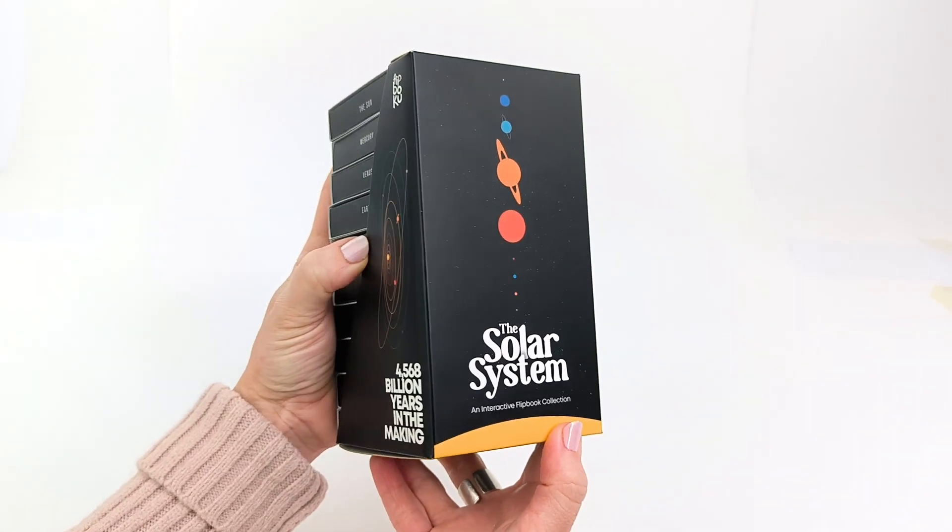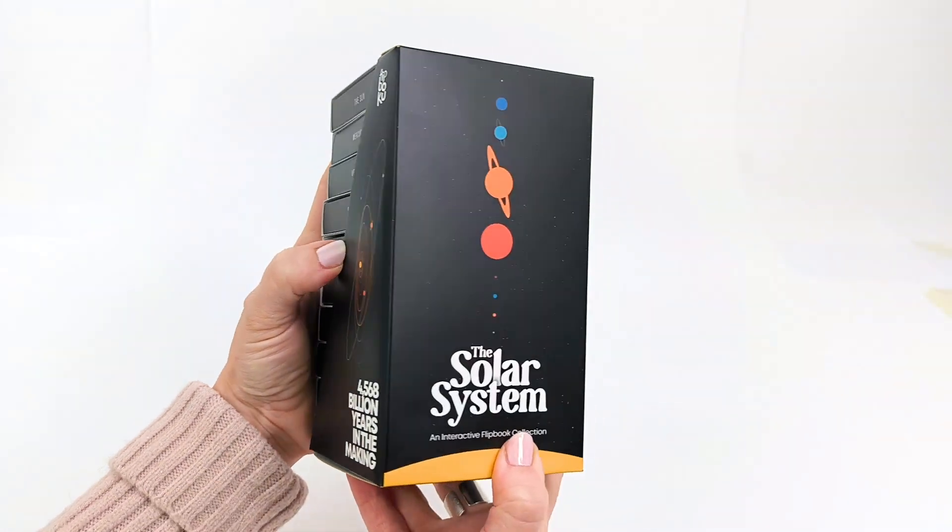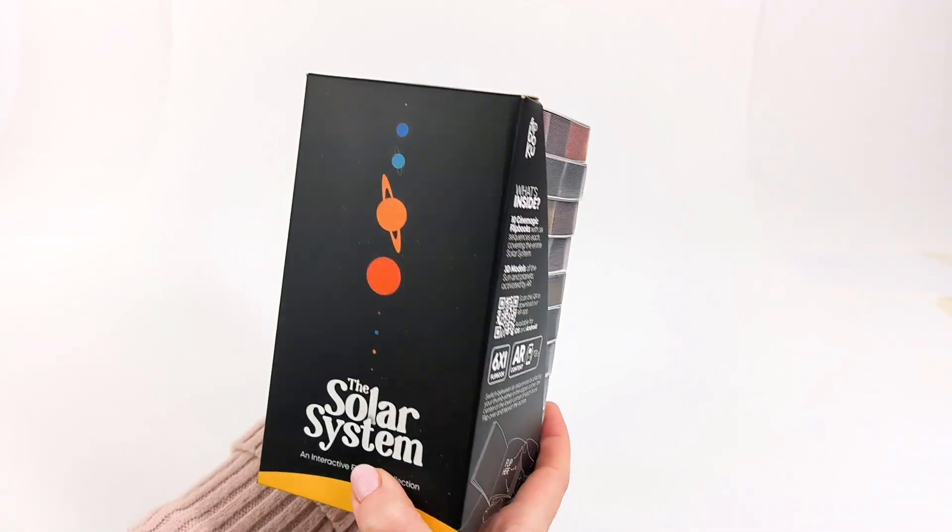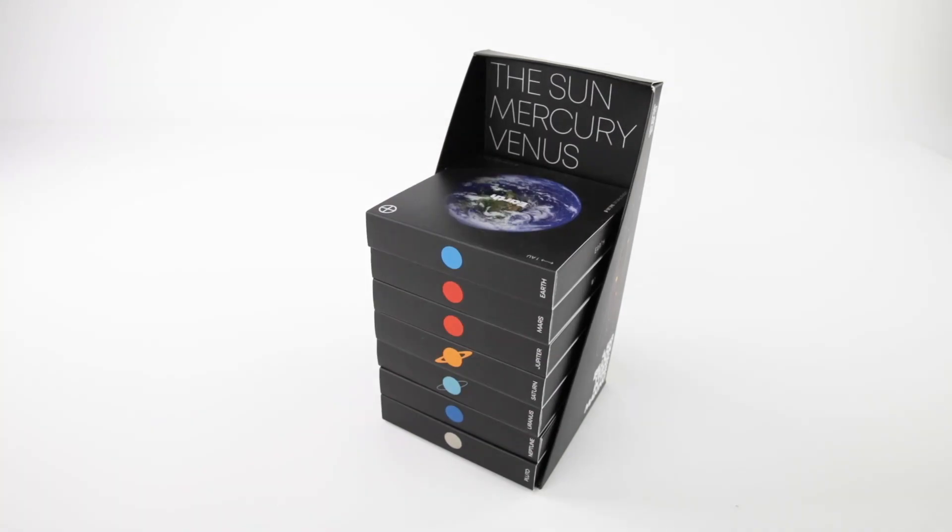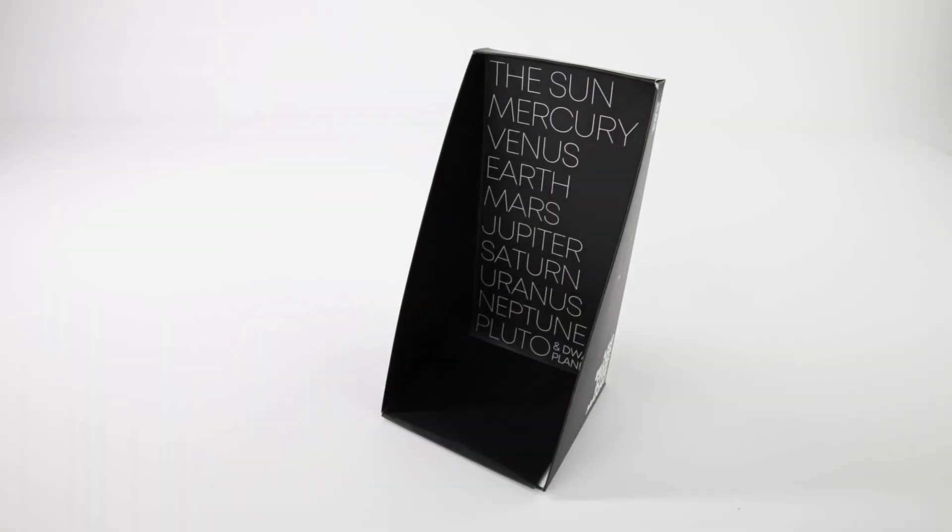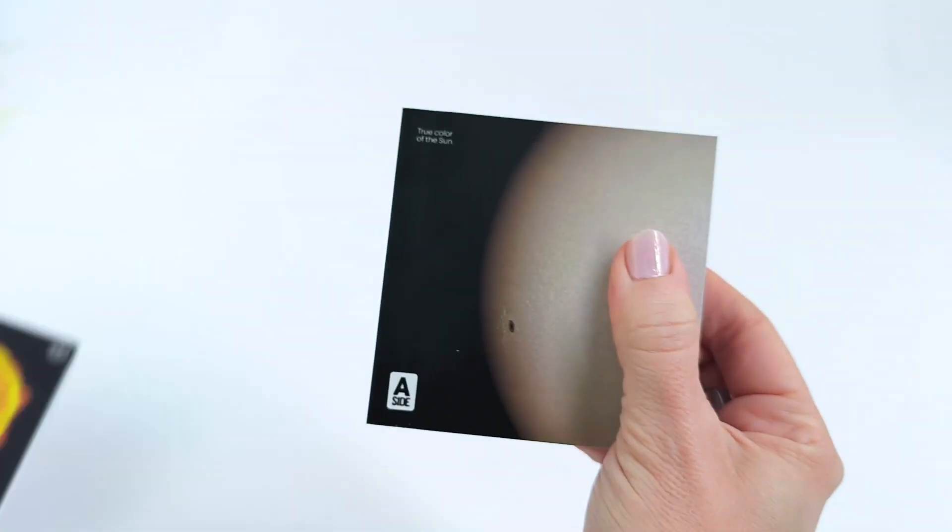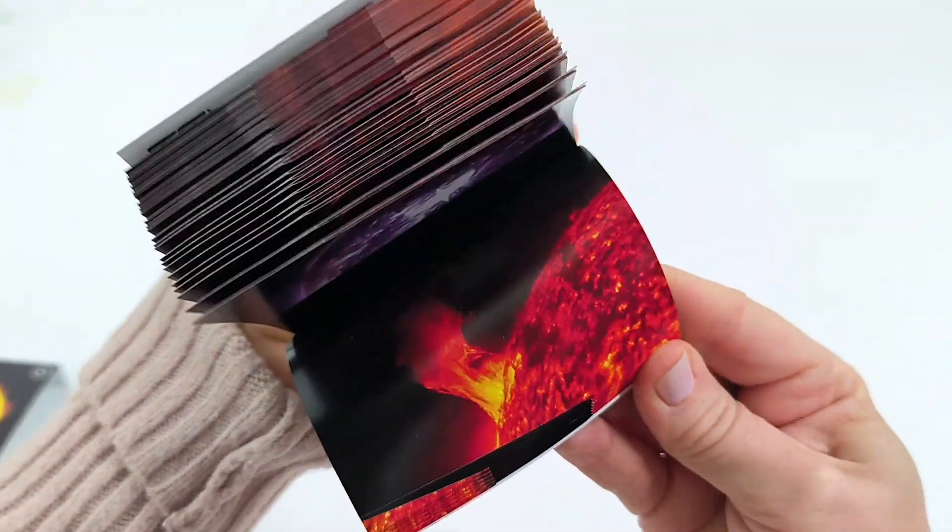This is our version of the solar system, a carefully crafted limited edition that we've packaged in a handy box. The collection consists of 10 Cinemagic flipbooks, featuring breathtaking footage of the main celestial bodies in our solar system.